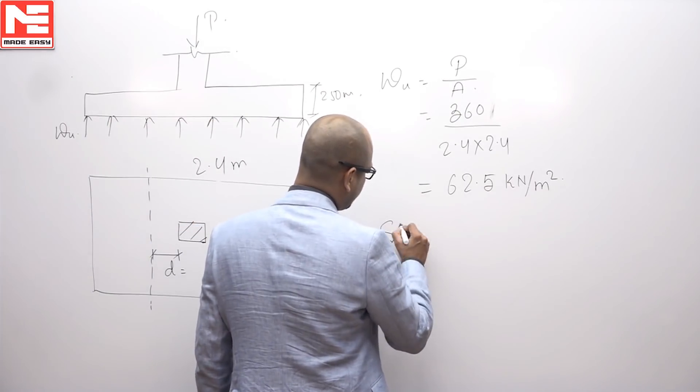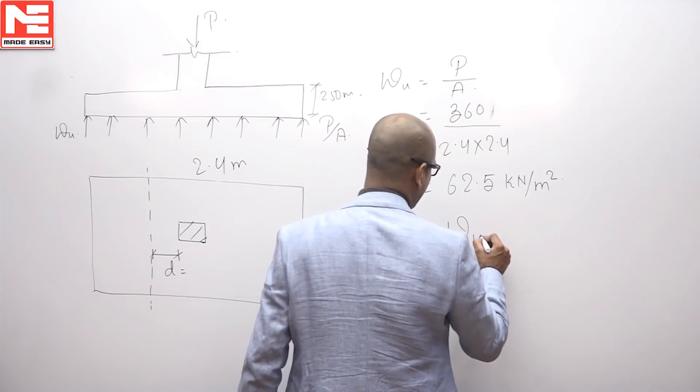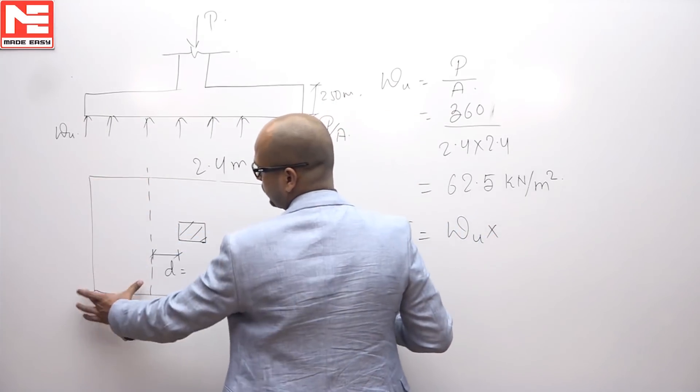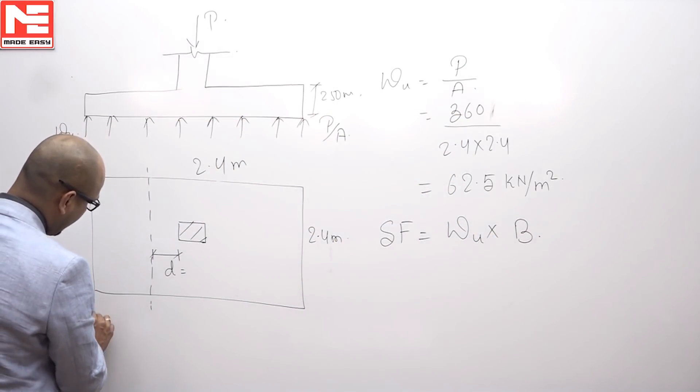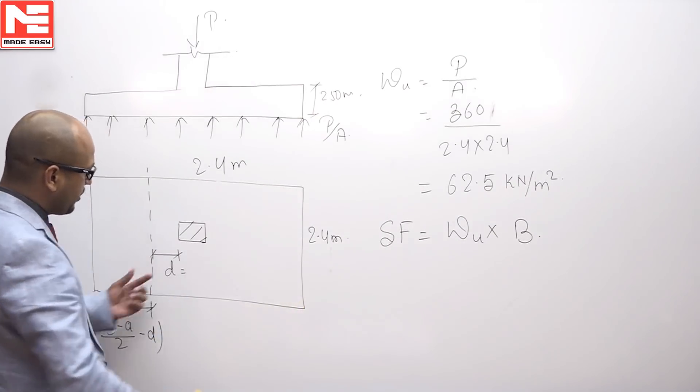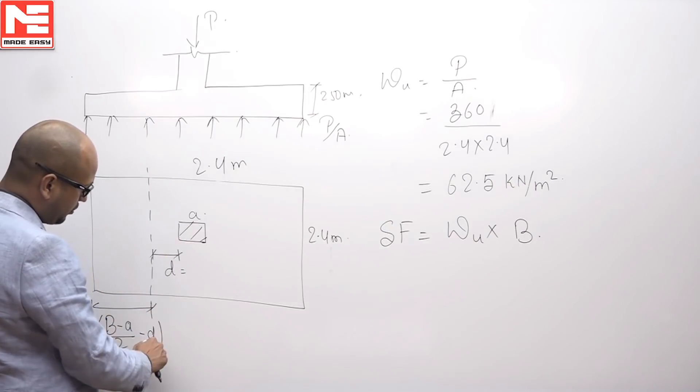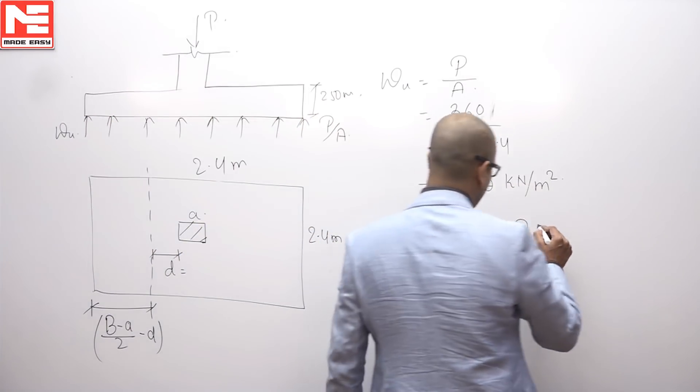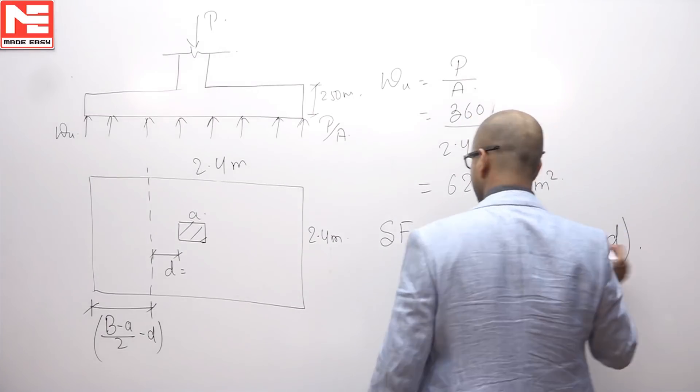First of all shear force. Shear force we can calculate in this way: Wu multiplied by this area. This area is B, B is this dimension, B minus A. B is total dimension minus A is this dimension. B by 2 minus A by 2 minus D. Wu into B into B minus A by 2 minus A by 2 minus D, this is the shear force.